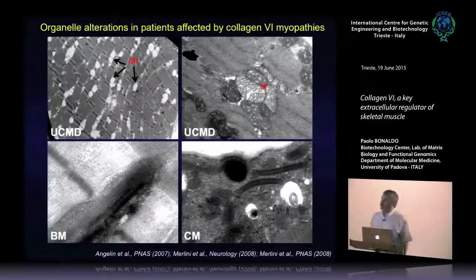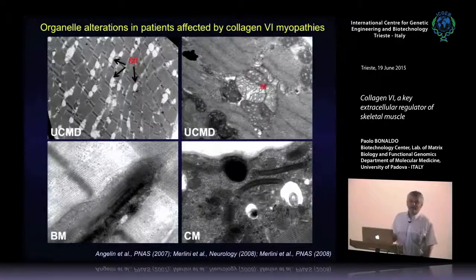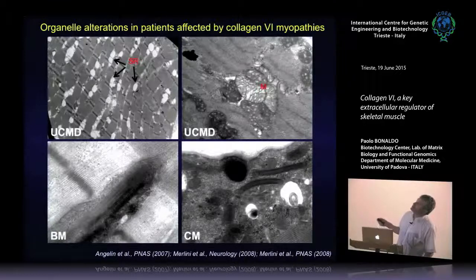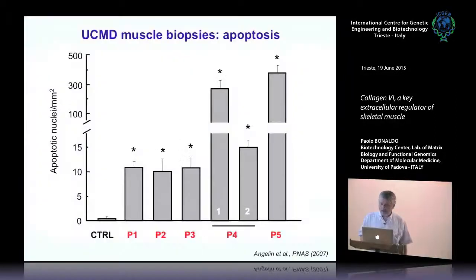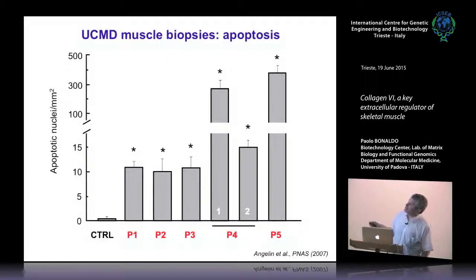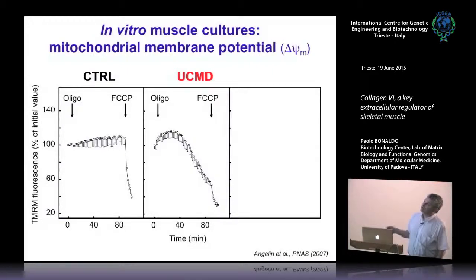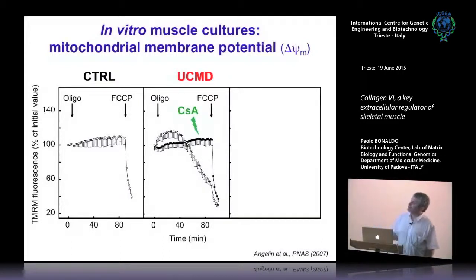Having this disorder led us to perform several studies in patients to understand whether the same defects found in mice were present. Indeed we found: dilated sarcoplasmic reticulum, mitochondrial alterations with tubular cristae and swollen appearance, a very strong increase of apoptosis — in some cases reaching 100, 300, even 500 times the incidence in healthy donors — and mitochondrial dysfunction. Isolated fibers from healthy donors maintain the mitochondrial membrane potential; in patients there is depolarization that is reversible by cyclosporin A or by plating over collagen 6.